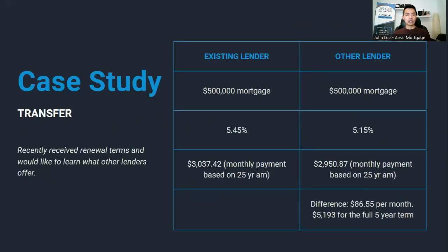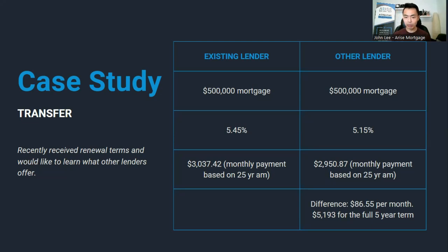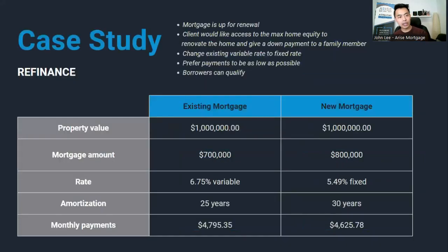Case study two — transfer. A client has a mortgage of $500,000 with an existing lender offering 5.45%, resulting in a monthly payment of $3,037.42 based on a 25-year amortization. Speaking to a mortgage broker, I was able to find another lender offering 5.15%, lowering the payment by about $86–$87 per month. Despite being just 0.3% lower, we're working with big numbers — and over five years, that's a savings of $5,193.